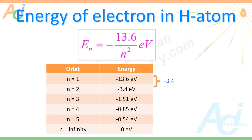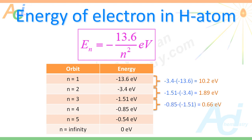It is also important to know that the energy difference between successive orbits decreases as we move away from the nucleus. The difference in energy between the first and second orbit is 10.2 eV, while it is just 1.89 eV between the second and third orbits. This trend continues as we move away from the nucleus.